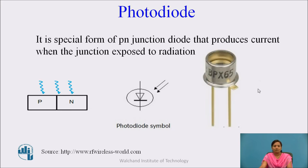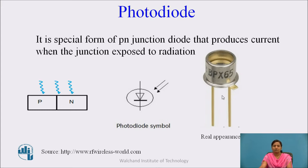This is the real appearance of the photodiode. Here, the PN junction is placed inside a glass material to allow light to fall on the junction. The other portion of the glass material is painted black or metallized, so that only the PN junction is exposed to light. There are two electrodes: anode and cathode.